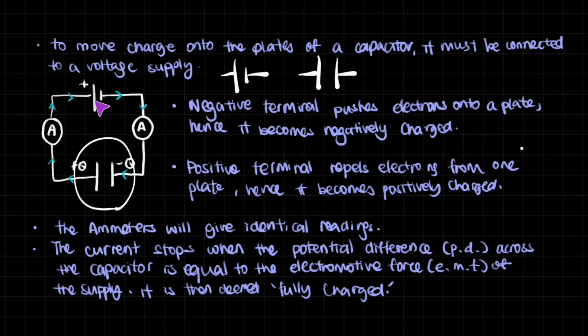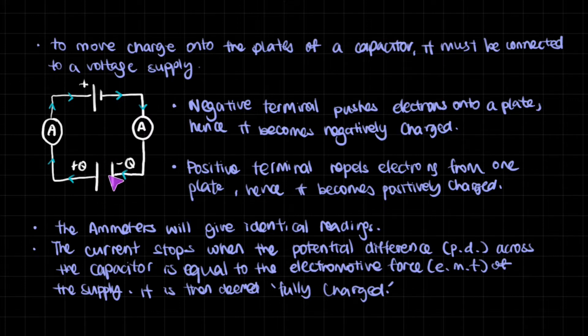Now, the negative terminal, which is the shorter stick right here, will push electrons onto a plate. Hence, it becomes negatively charged. So essentially, what we have is the negative terminal getting electrons out, and it flows out into here. However, it stops flowing because there is a dielectric. So the electrons can't flow through anymore, which means that the electrons start accumulating on this plate.